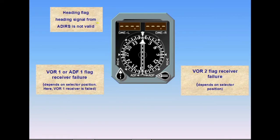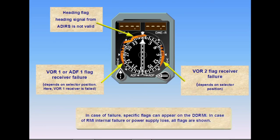In case of failure, specific flags can disappear on the DDRMI — the digital distance radiomagnetic indicator. In case of radiomagnetic indicator internal failure or power supply loss, all flags are shown.